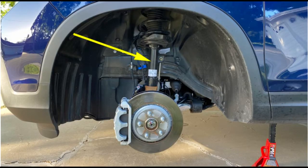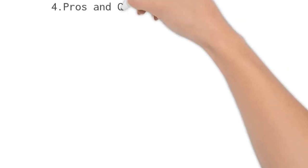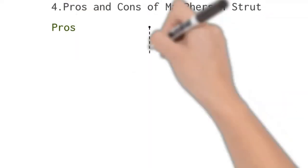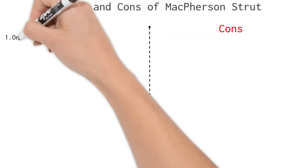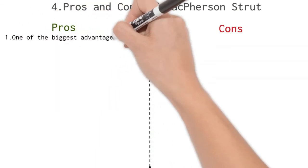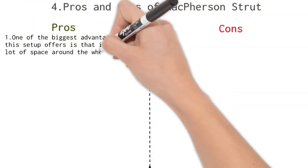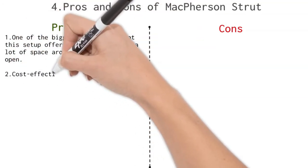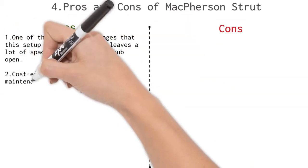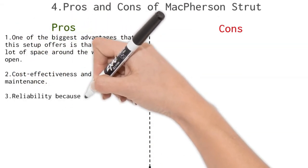Now let's talk about some pros and cons of MacPherson Strut Suspension. One of the biggest advantages that this setup offers is that it leaves a lot of space around the wheel hub open. This space is where the drive shaft is located. Cost effectiveness and the ease of maintenance are the key features of this suspension type. Reliability because of fewer number of parts. Less weight because of fewer components.